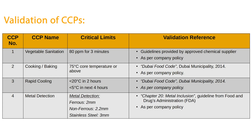This is the basic introduction of the topic. Let's look at this table. For validation, on one side we write all of our critical limits — these examples are taken from one of my old assignments. In front of each critical limit, we mention the validation reference, which can be the legal reference, the company policy, the customer requirement, or scientific evidence. When we complete this study, listing where each critical limit came from, this is called the validation of the critical limit.